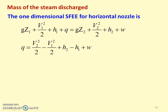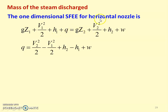The steady flow energy equation for one-dimensional flow. First we derive the mass of the steam discharge, starting from the one-dimensional steady flow energy equation for a horizontal nozzle: GZ1 plus V1 squared by 2 plus H1 plus Q equal to GZ2 plus V2 squared by 2 plus H2 plus W. That is the general form of the steady flow energy equation.